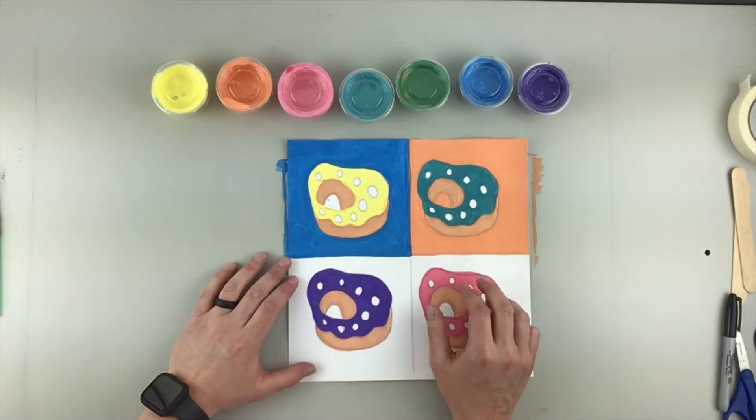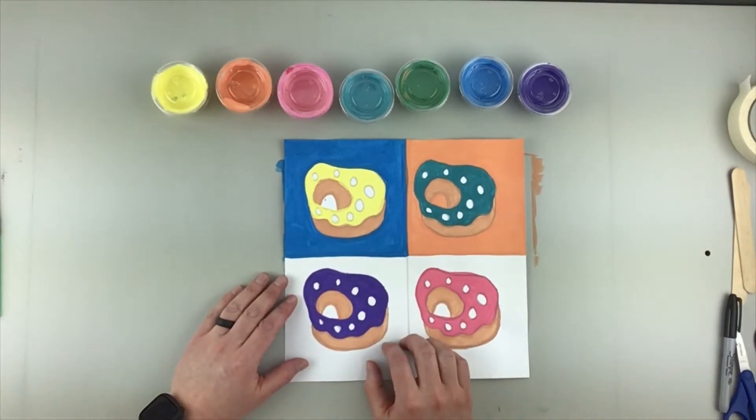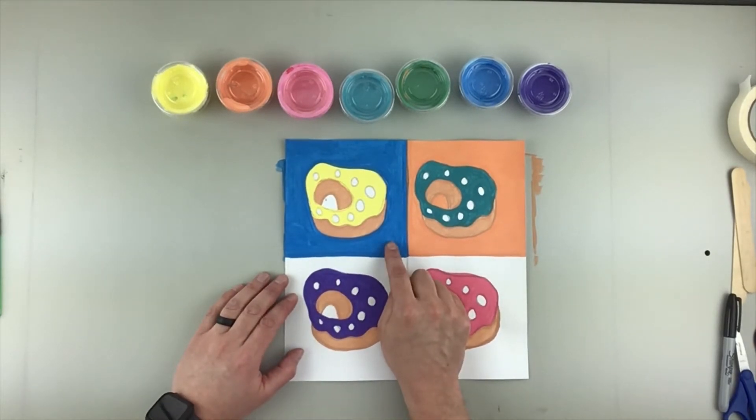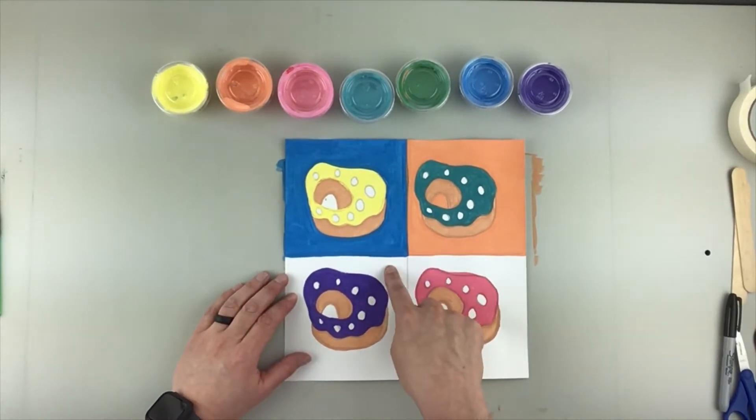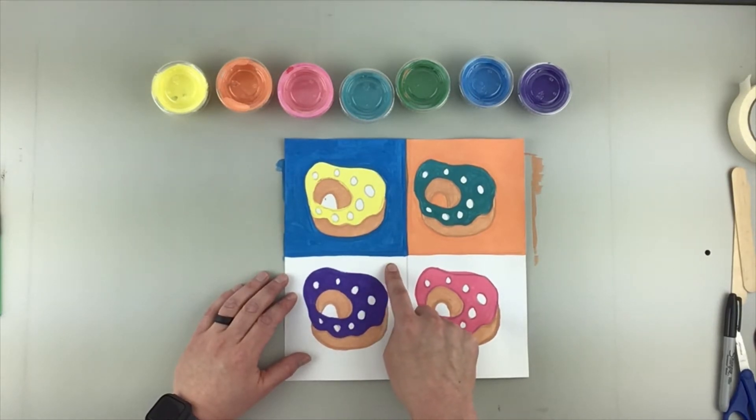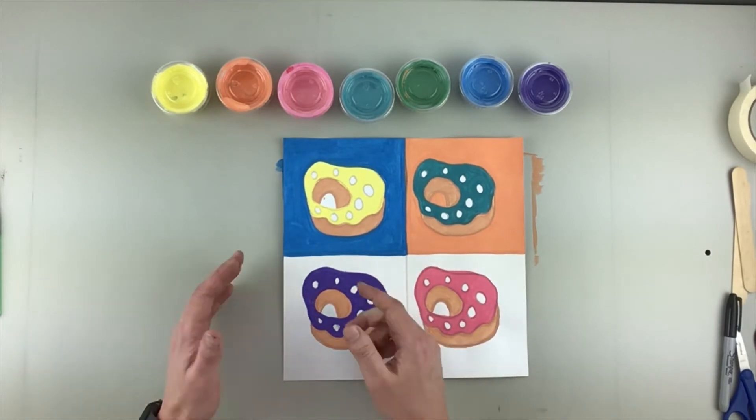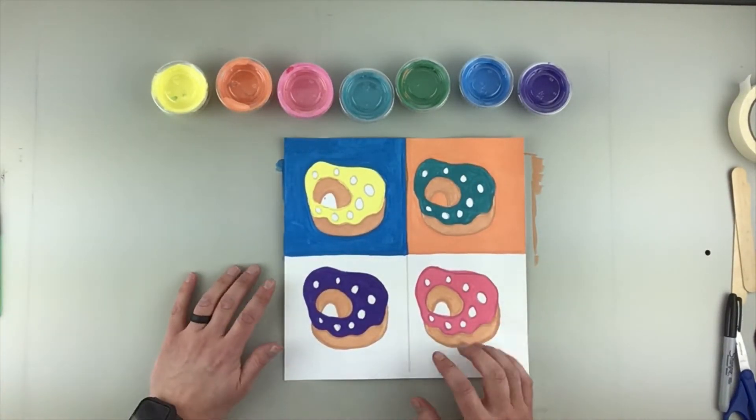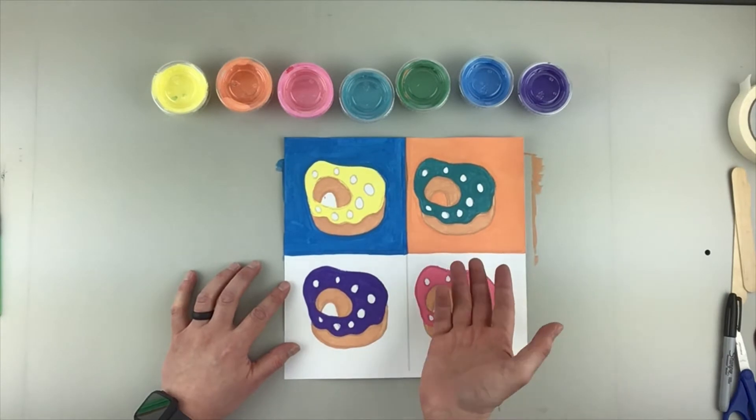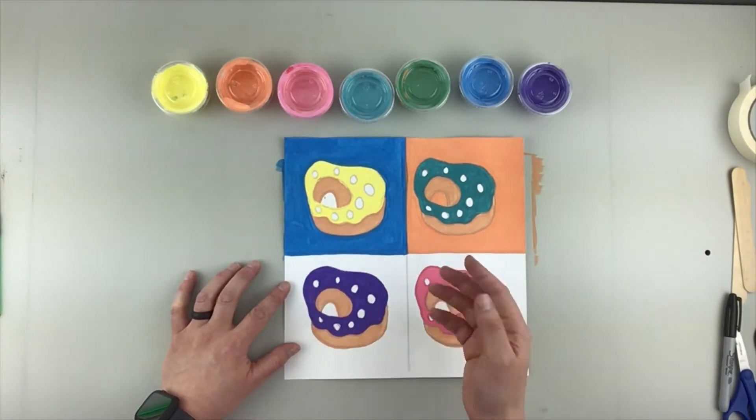Once you've finished square one and square two, we're going to go ahead and go to square three. Now I've used blue right here so I don't want to do blue again. I have purple so I want to skip purple. If I wanted to I could probably use orange again, but we do have lots of colors here. So I've been kind of going from cold and warm, warm to cold.